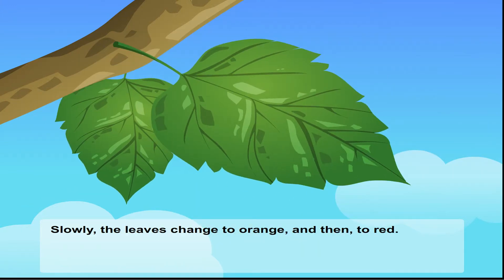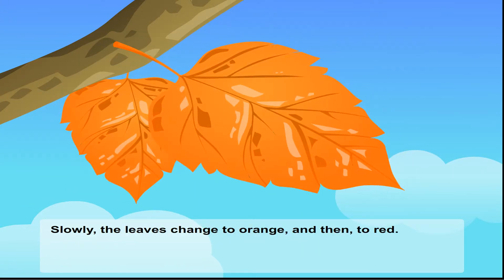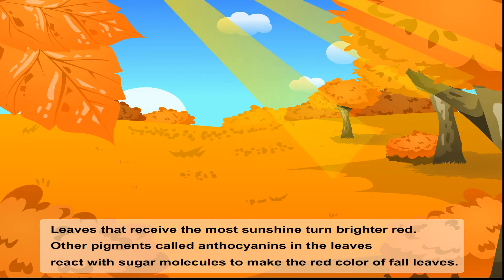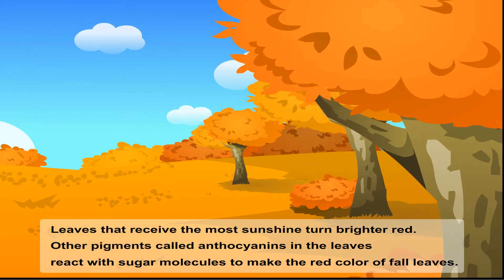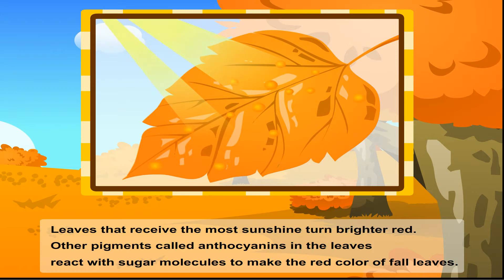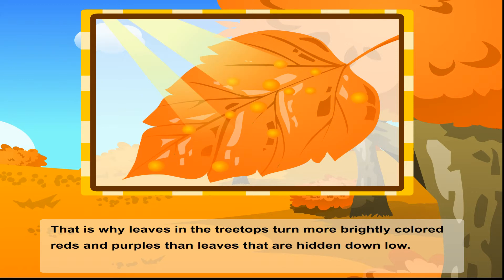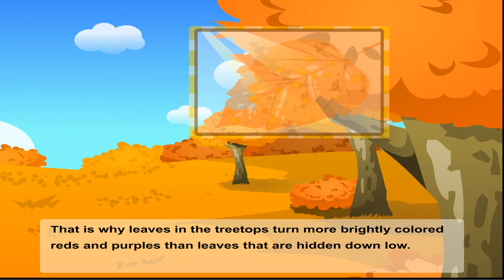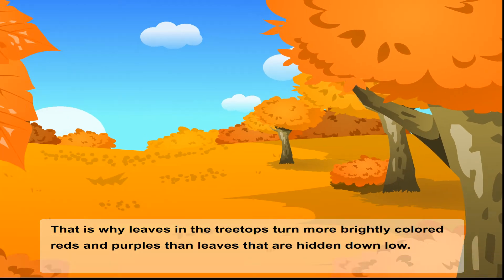Slowly, the leaves change to orange and then to red. Leaves that receive the most sunshine turn brighter red. Other pigments called anthocyanins in the leaves react with sugar molecules to make the red color of fall leaves. That is why leaves in the treetops turn more brightly colored reds and purples than leaves that are hidden down low.